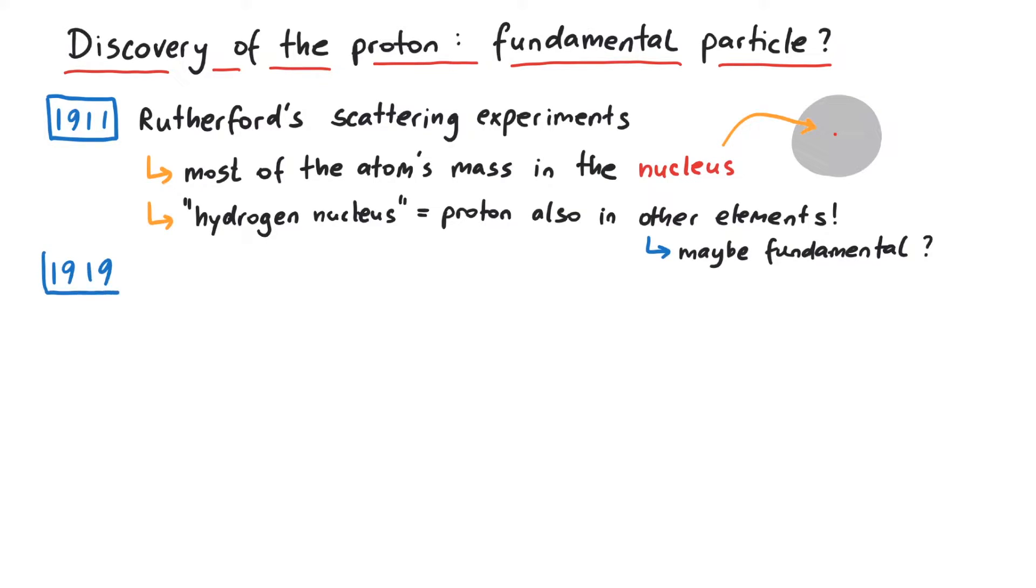In 1919, Rutherford observed that when he shot alpha particles into air, which is basically nitrogen, some hydrogen nuclei were emitted. He thought that the alpha particle knocked out a proton from the nitrogen nucleus, which reduces its atomic number by one, thus turning it into carbon.